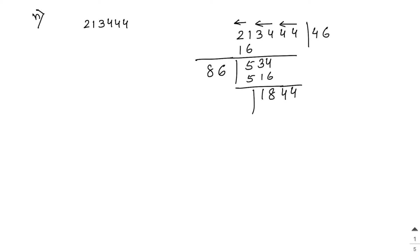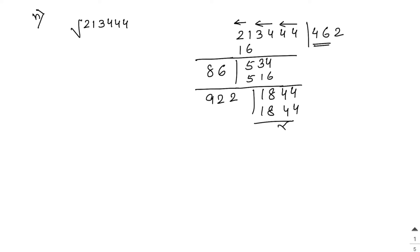Bring down the next pair 44, giving 1844. The current quotient is 46, so double of 46 is 92. Try 922×2=1844 — that works exactly. So the square root of 213444 equals 462.